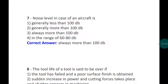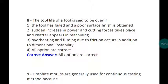Question eight: The life of a tool is said to be over if - the tool has failed and poor surface finish is obtained, yes that is correct. Or sudden increase in power and cutting forces takes place and chatter appears in machining, that is also true. And option three, overheating and fuming due to friction occurs in addition to dimensional instability. All three options are correct. These are the reasons when the tool life of a tool is said to be over.